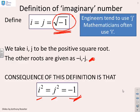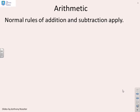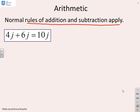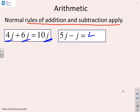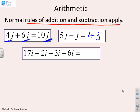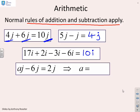For complex or imaginary numbers the normal rules of addition and subtraction apply. For example, 4j plus 6j gives 10j — nothing strange. 5j minus j gives 4j. And 17i plus 2i minus 3i minus 6i gives 10i. For an equation like Aj minus 6j equals 2j, moving the 6 to the other side gives Aj equals 8j, so A equals 8.